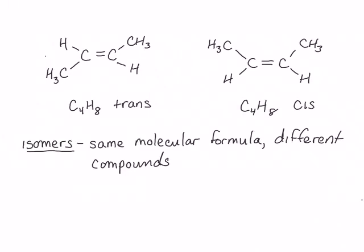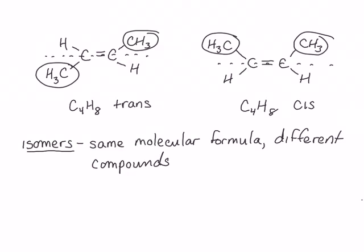When I'm talking about being on the same side or different sides of the double bond, we're talking about an axis that runs through that double bond. And these two isomers have different physical properties, such as boiling point. They actually differ by several degrees, just based on the location of those CH3 groups relative to one another.